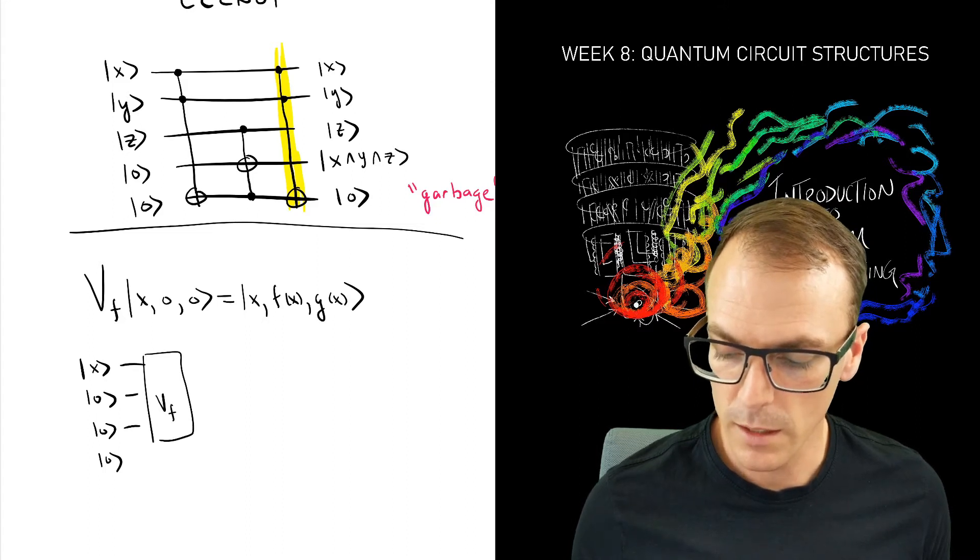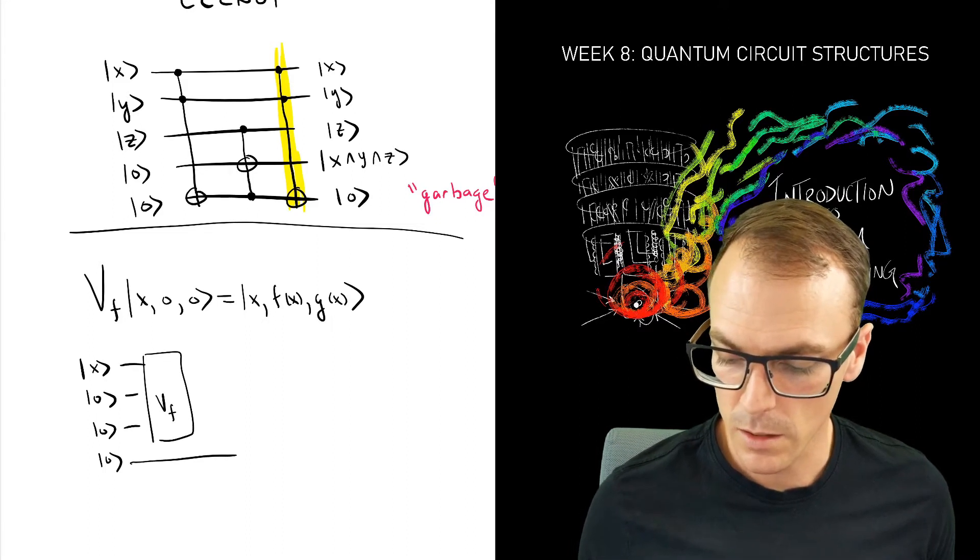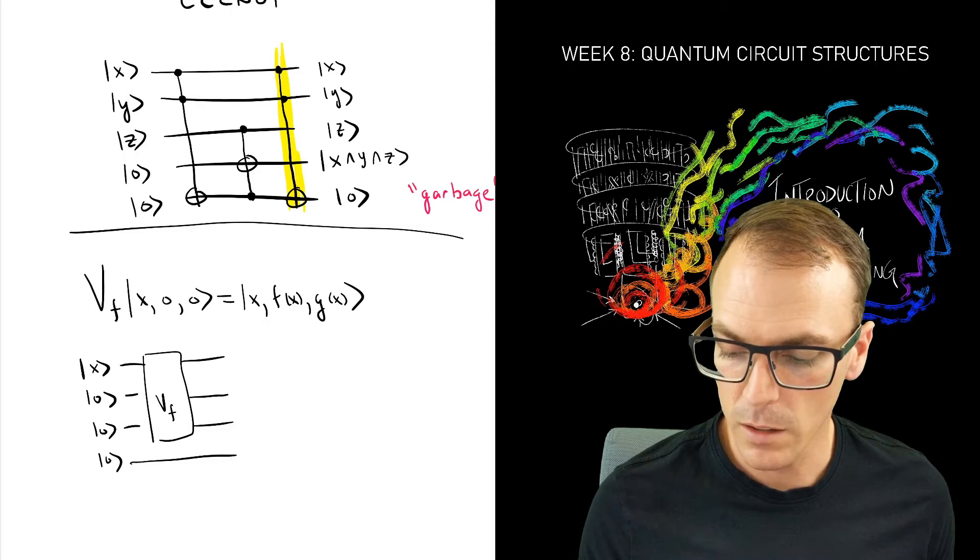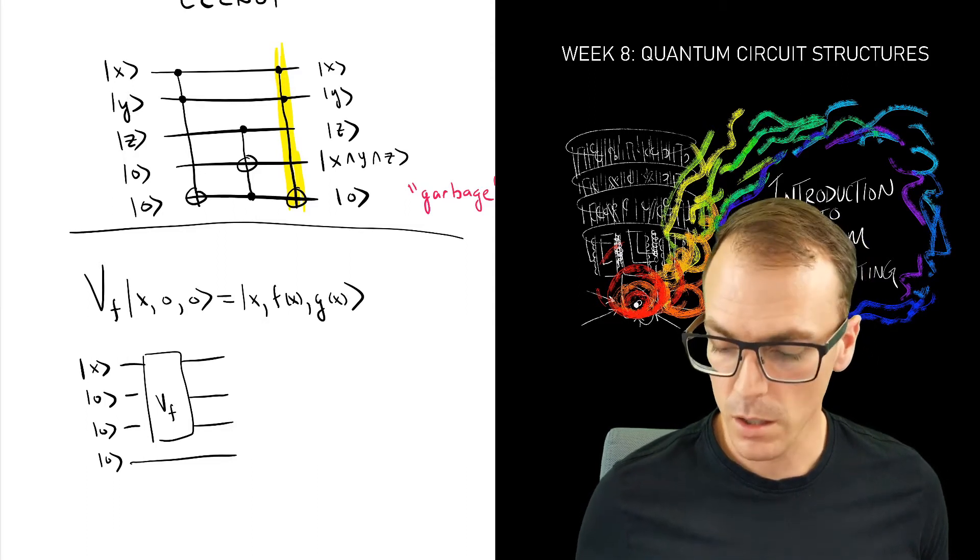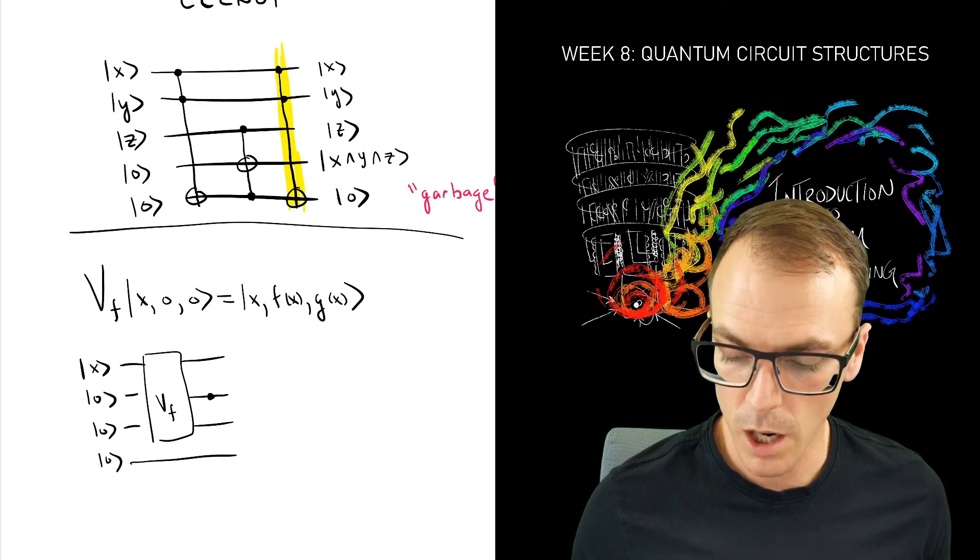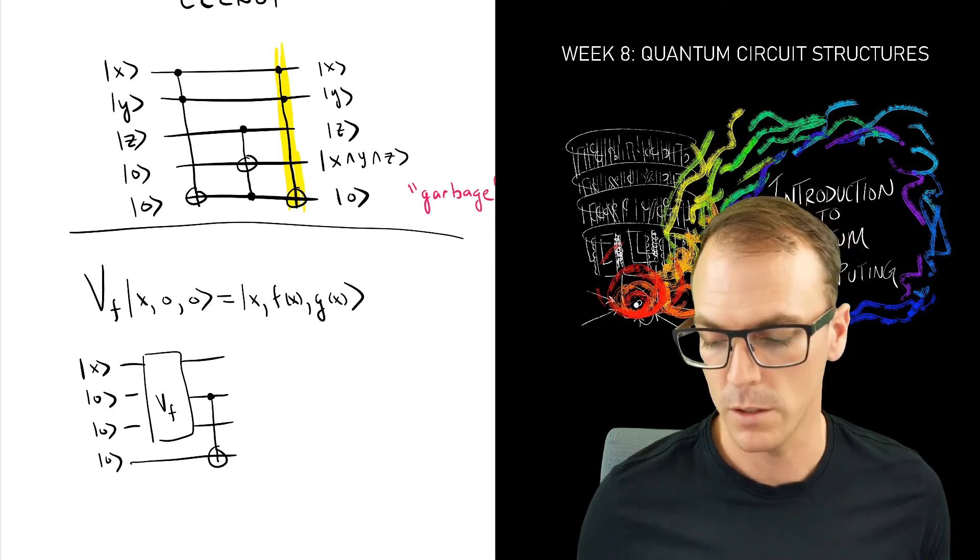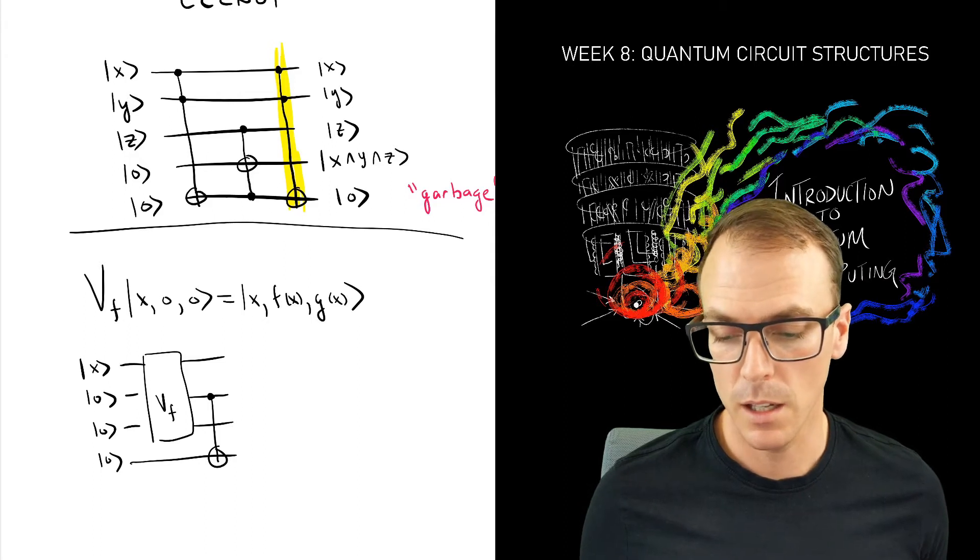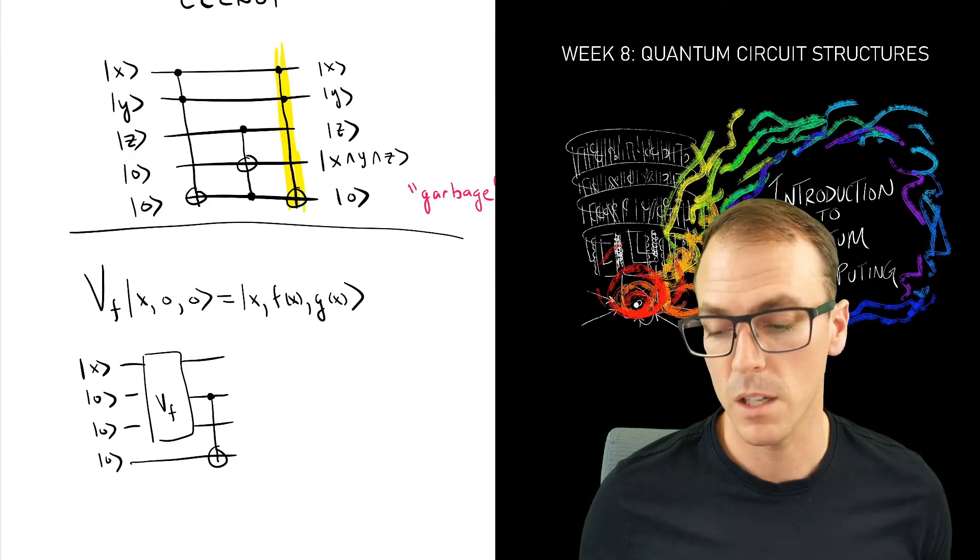So there's our V and we've added now another register. And what this register is used for is to copy the value of the function.